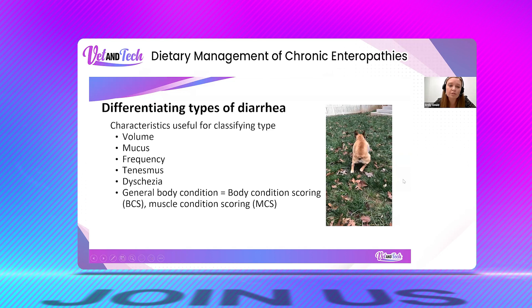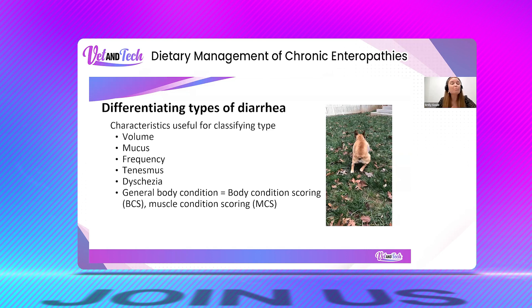MCS is often one of the first things to go with some of these more chronic disorders. And so, if we can score normal for our patients, we will be more adept at detecting when things are going awry or starting to become abnormal, even prior to some of these other clinical signs setting in and prior to lab work changes.